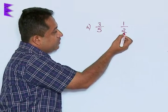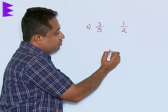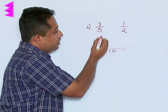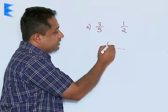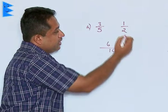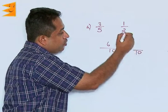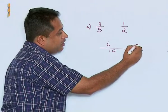The denominator at the moment is 5 here and 2 here. The LCM of 5 and 2 is 10. We will see 5 goes 2 times in 10. So, 2 into 3, we are getting 6 upon 10. And here, we are taking the LCM as 10. 2 goes 5 times. 5 into 1 is 5.